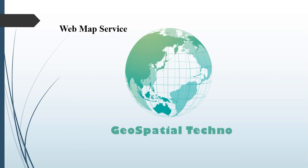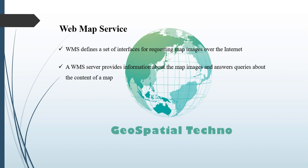Now we are going to talk about the WMS standards. The OGC Web Map Service interface standard, or WMS, defines a set of interfaces for requesting map images over the internet. WMS makes it easy for a client to request images on demand, changing parameters such as size and coordinate reference system. A WMS server — a service that implements the WMS standard — provides information about what maps the service provides, produces map images, and answers queries about the content of a map.